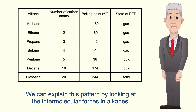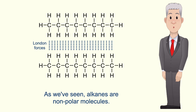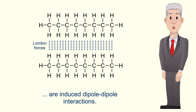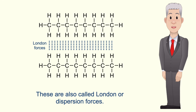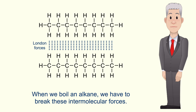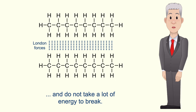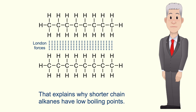We can explain this pattern by looking at the intermolecular forces in alkanes. As we've seen, alkanes are non-polar molecules, so the intermolecular forces acting between alkane molecules are induced dipole-dipole interactions, also called London or dispersion forces. When we boil an alkane we have to break these intermolecular forces. London forces are weak and do not take a lot of energy to break, and that explains why shorter chain alkanes have low boiling points.